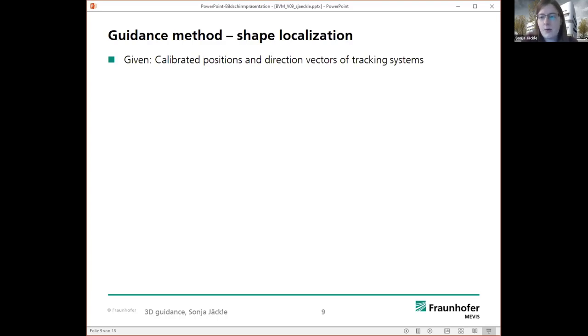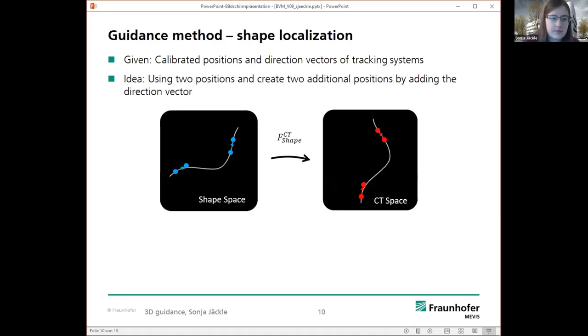How can we obtain now three-dimensional correctly placed shape? And the idea is here to use two positions of the EM tracking and the corresponding shape. But it's not enough, because with two points, you cannot obtain a rigid transformation, which can be uniquely determined. So you need at least one point more.